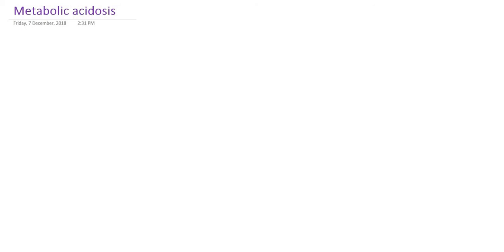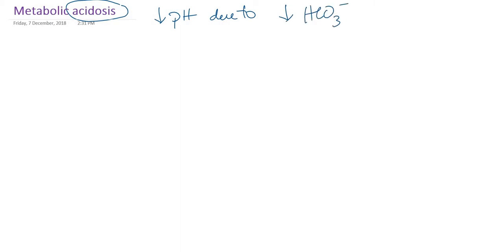Hello everyone. In this presentation we will continue our acid-base disorder. There is another important disorder called metabolic acidosis. Metabolic acidosis means acidosis — we know that there is a decrease in the pH. So decrease in the pH is due to decrease in the bicarbonate or loss of bicarbonate. The primary deficit in metabolic acidosis is a decrease in bicarbonate level in the blood.